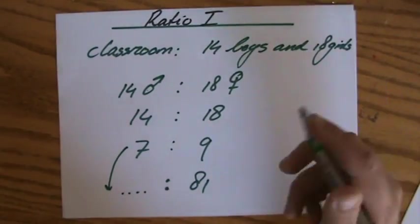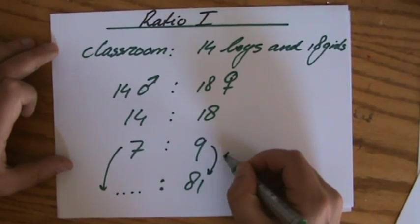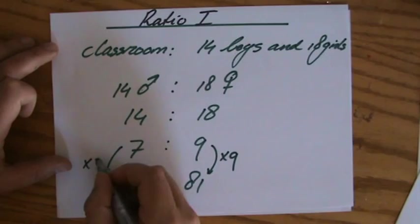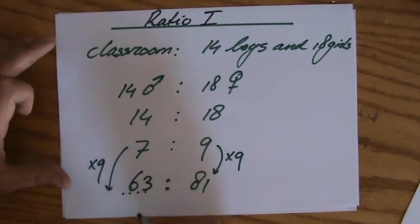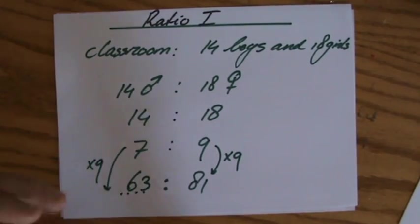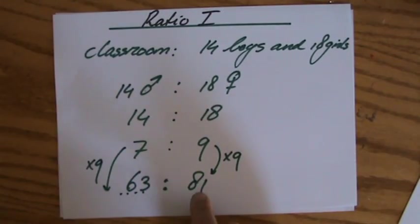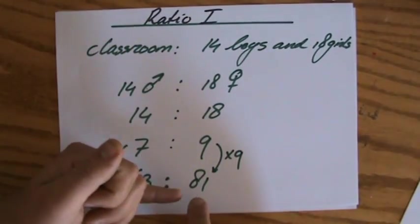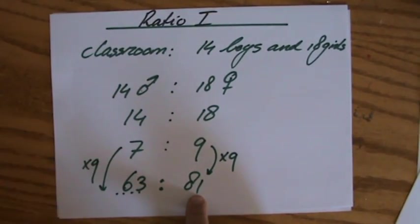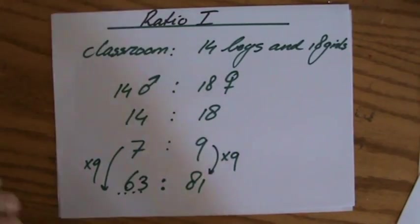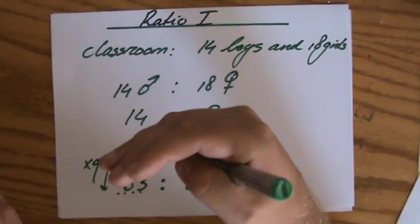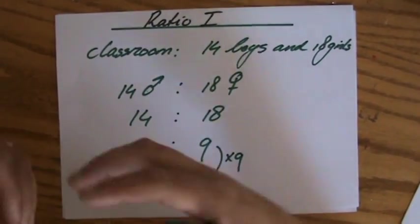That is a factor of 9, so there are going to be 63 boys, because a ratio of 7 to 9, if I have 81 girls, means I'll have 63 boys. Same factor. So ratio always give it in its simplest form.